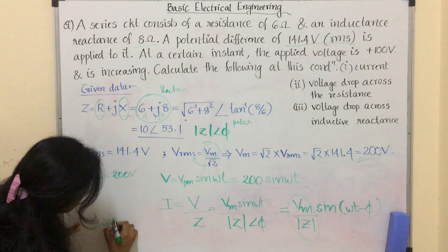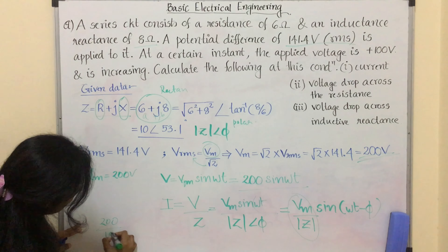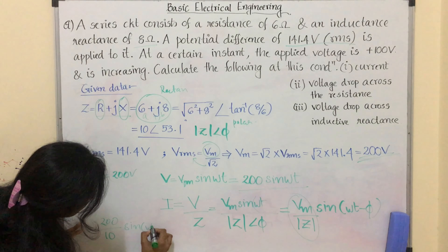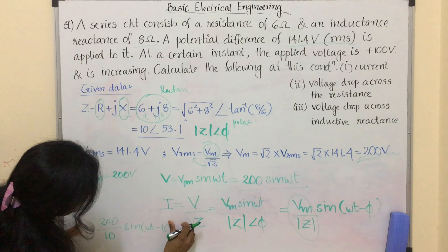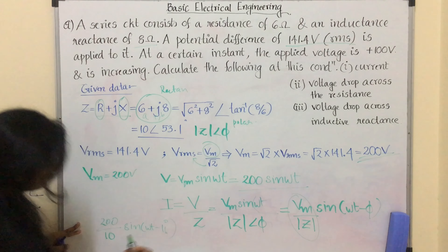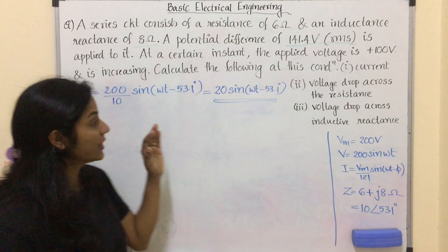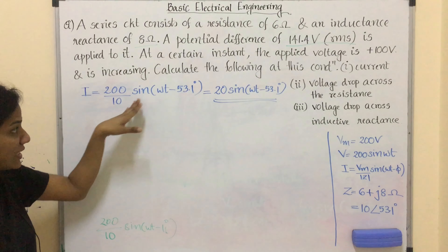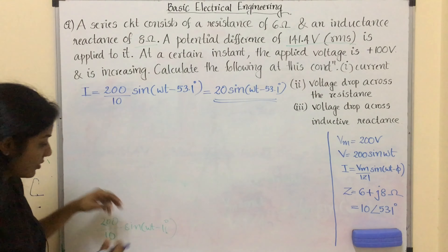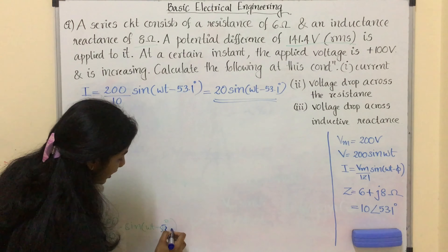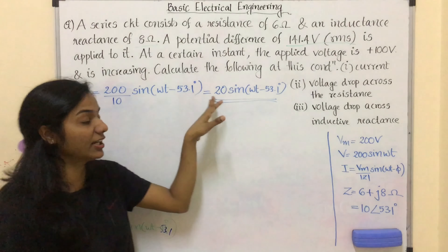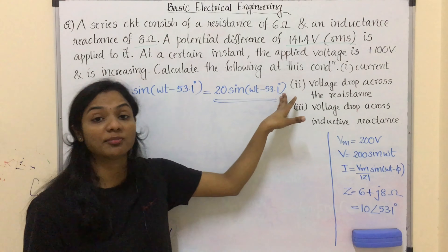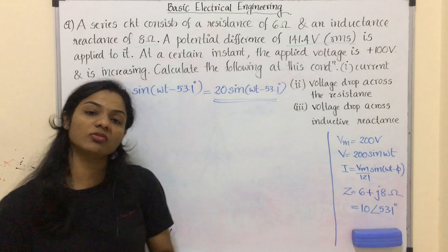Substituting the values: I = (200 / 10) · sin(ωt - 53.1°) = 20 sin(ωt - 53.1°). This is the general current equation.